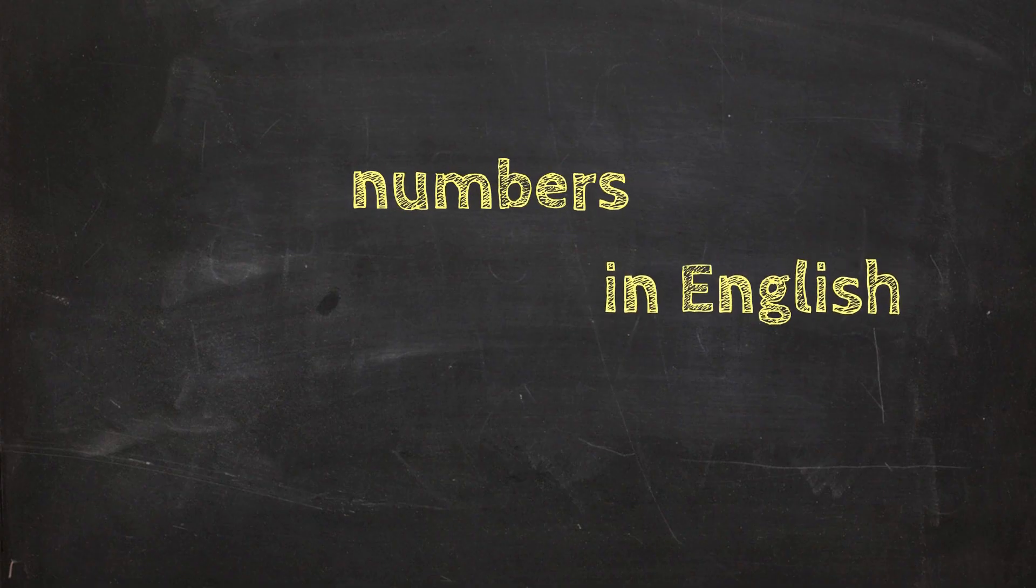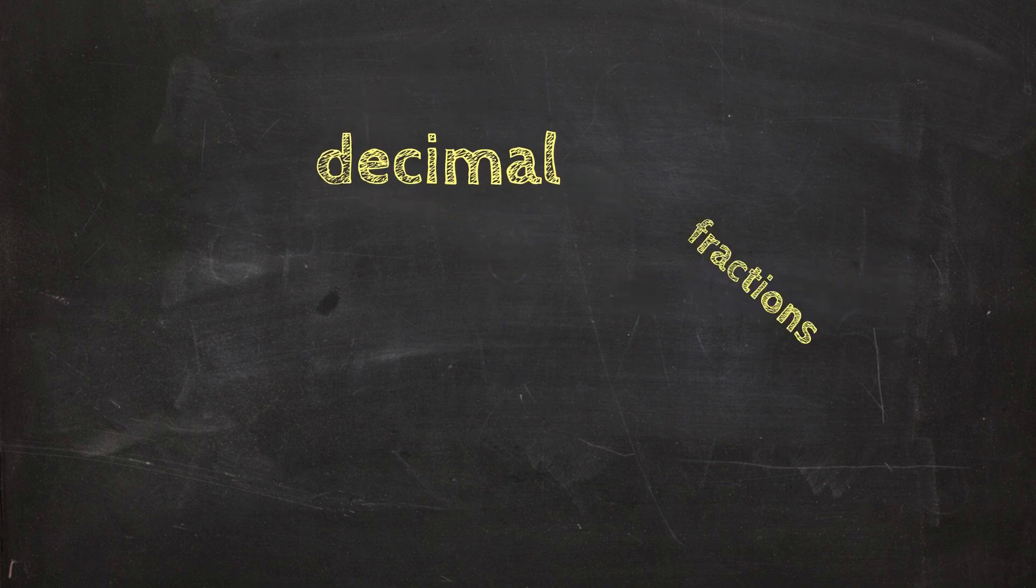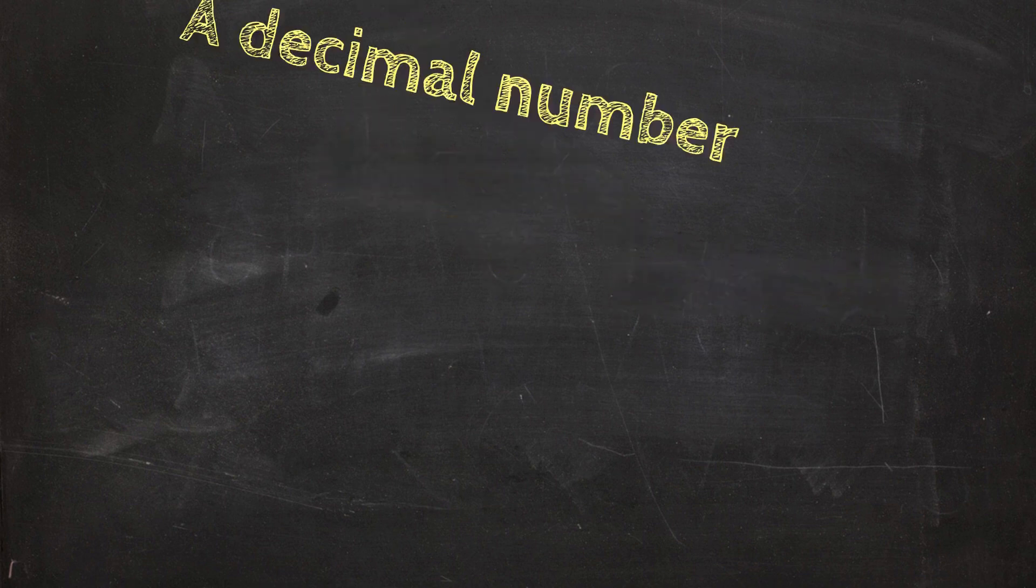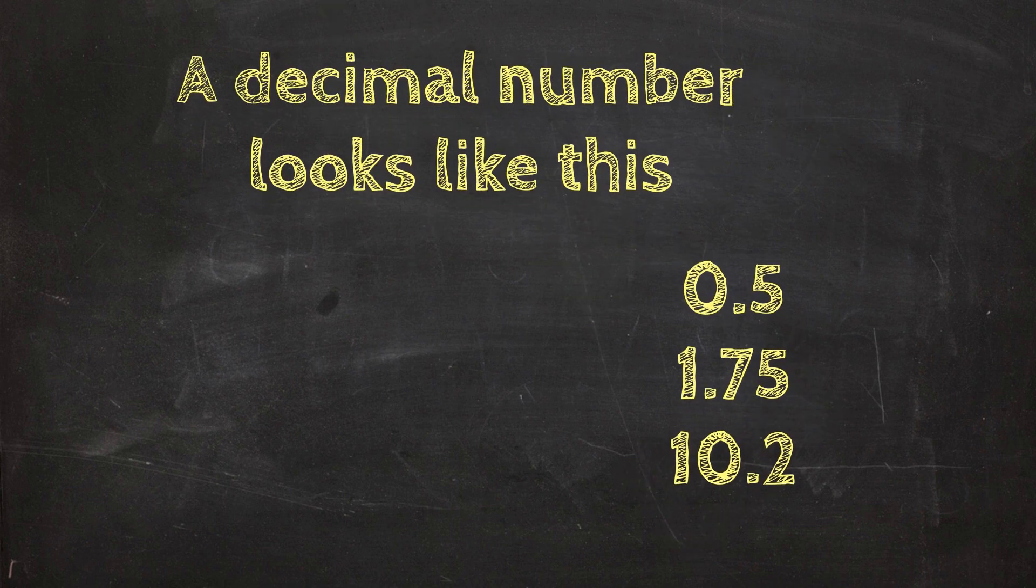So in this short video session we will look at the vocabulary that we use for numbers in English. We'll learn how to talk or say decimal numbers and fractions. A decimal number looks like this, and a fraction looks like this.